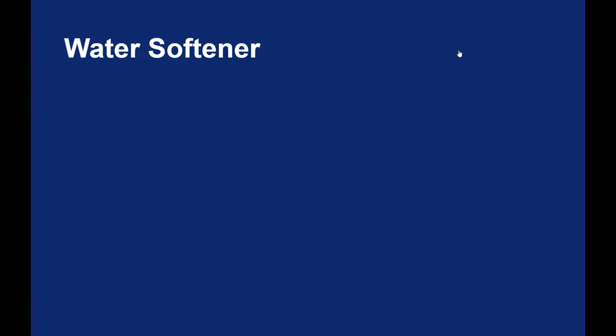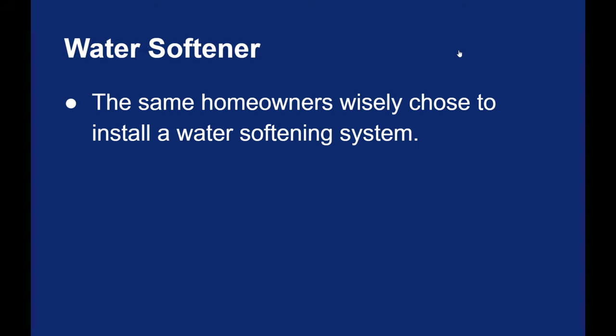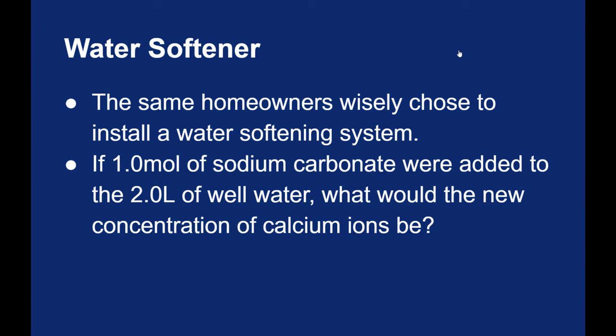Let's talk about a way of softening this water. The same homeowners with calcium carbonate saturated in their drinking water. Now to soften it, what we're going to do is we're going to get rid of calcium ions. And we can do this by adding sodium carbonate.